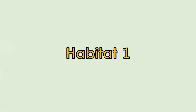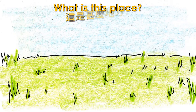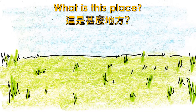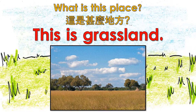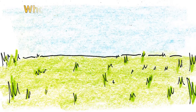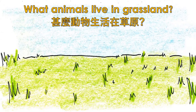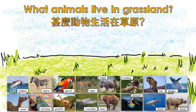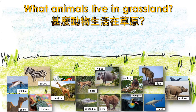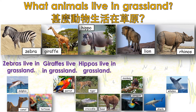Habitat 1. What is this place? This is grassland. What animals live in grassland? Zebras live in grassland. Giraffes live in grassland. Hippos live in grassland. Lions live in grassland.